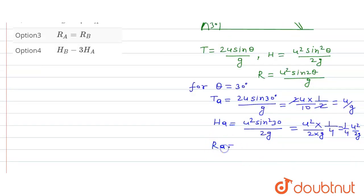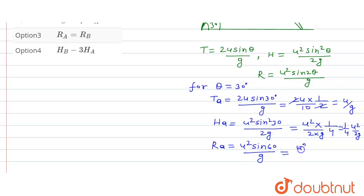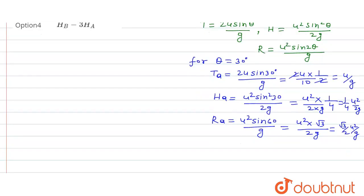The range for A, rA, is equal to u squared sine 2 theta, meaning sine 60, upon g. Sine 60 is root 3 over 2, so rA equals root 3 over 2 times u squared over g.